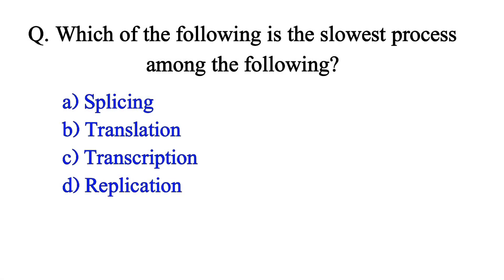Which of the following is the slowest process? Option A: splicing. Option B: translation. Option C: transcription. Option D: replication. The correct answer is Option B: translation.